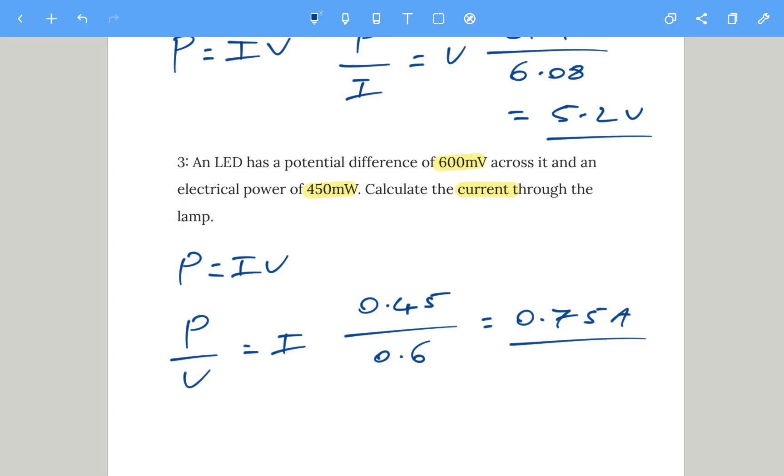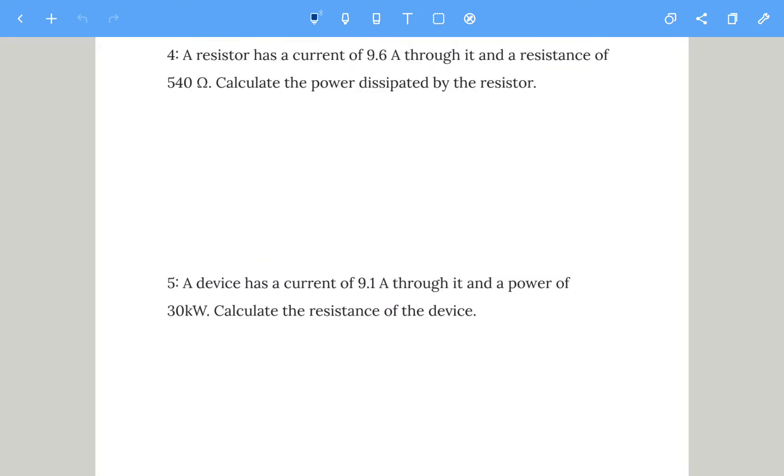Let's try some P equals I squared R questions. If you want to pause and have a go at these, then I'll take you through the answers when you've done them. A resistor has a current of 9.6 amps through it and a resistance of 540 ohms, and we're going to calculate the power dissipated by the resistor.